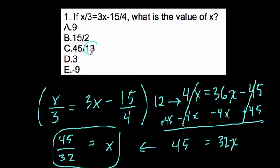It seems to be a typo here. This should not be 13, but 32. So I would circle C, 45 over 32. Thanks.